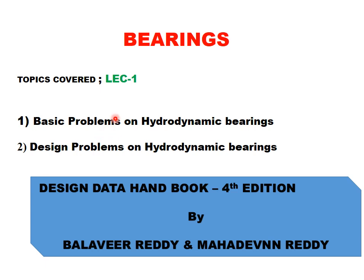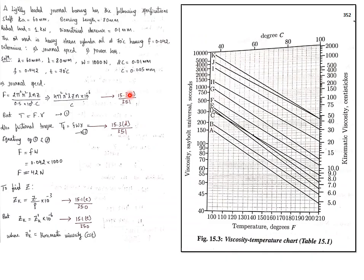Few topics we will be covering in this presentation using the Data Handbook 4th edition. This is the first problem: a lightly loaded bearing has the following specifications — shaft diameter, bearing length, radial load, and diametrical clearance. The oil used is a steel cylinder oil at 70 degrees Celsius having a coefficient of friction of 0.042. Determine journal speed and power loss. Let's see how to solve this problem.